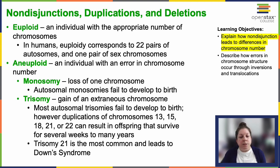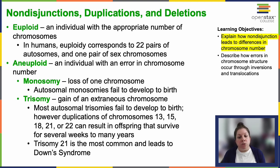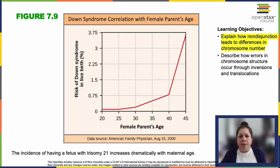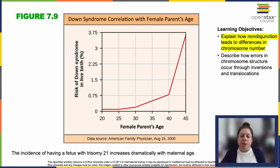One of the most common trisomies is of chromosome 21, which results in Down syndrome. This is marked by characteristic features, certain developmental delays, as well as early onset dementia, heart disease, and a whole array of very serious health implications. The risk of Down syndrome increases particularly with maternal age. As you can see in this figure, as the female parent's age reaches 40, that's when we see a big jump — between 40 and 45 it goes up a great deal.